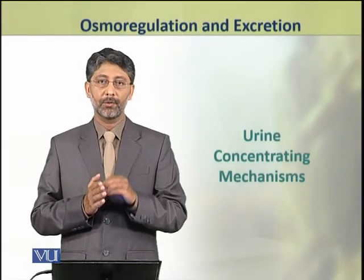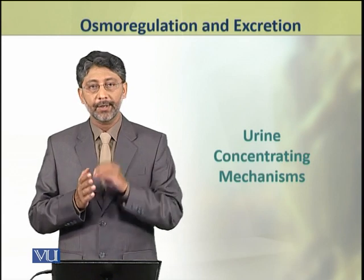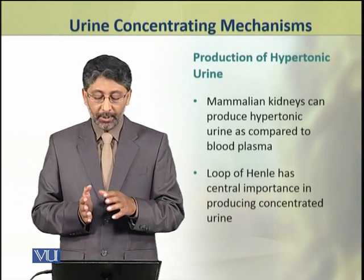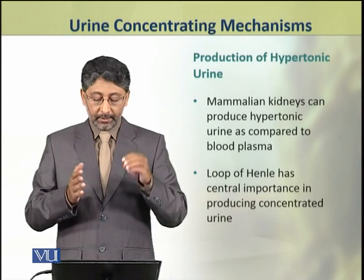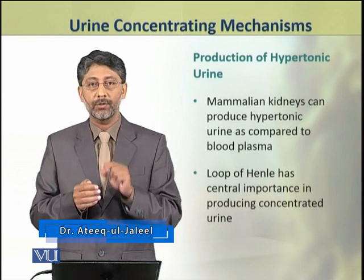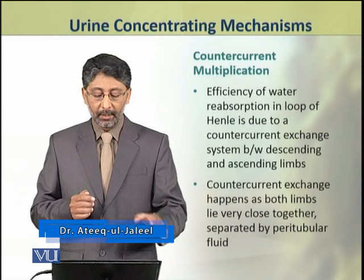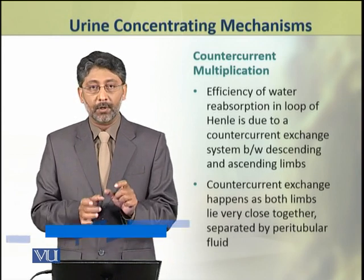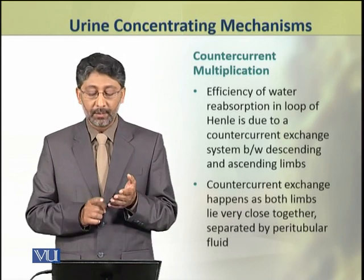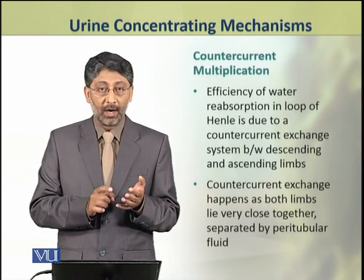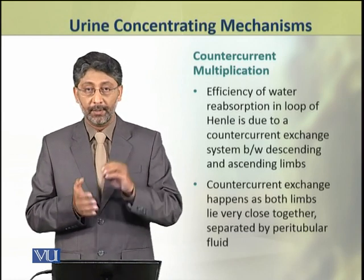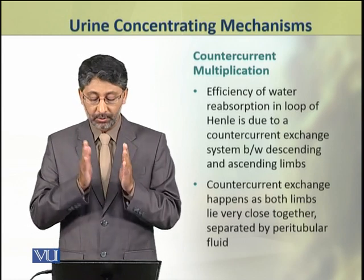Dear students, in this topic we shall discuss the urine concentrating mechanisms. Mammalian kidneys can produce hypertonic urine as compared to blood plasma. This is because of the presence of the loop of Henle, which has central importance in producing concentrated urine. The efficiency of water reabsorption in the loop of Henle is due to a counter current exchange system between the ascending and descending limbs.